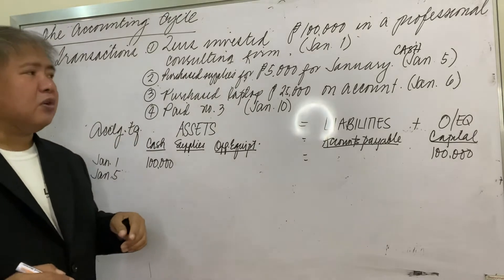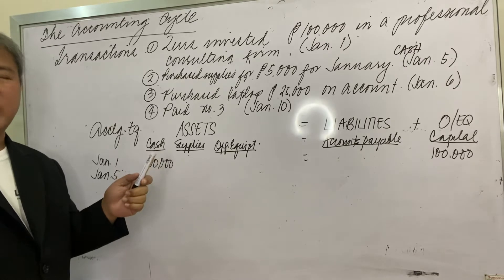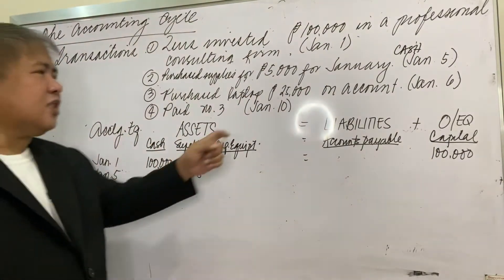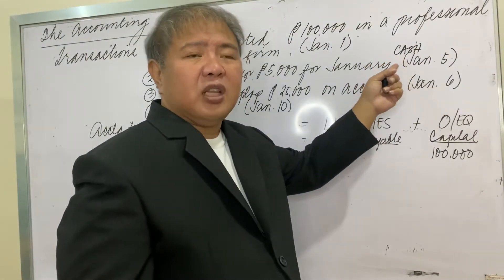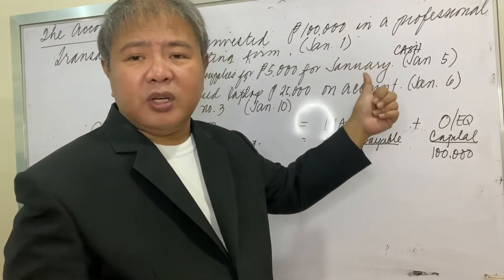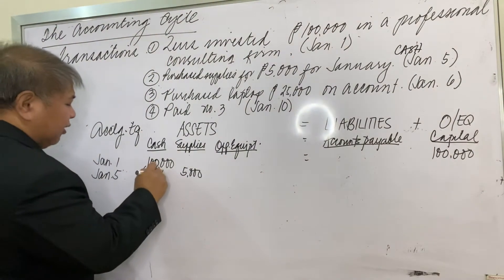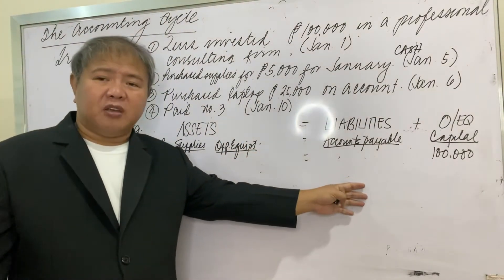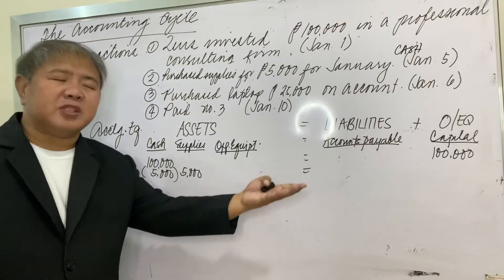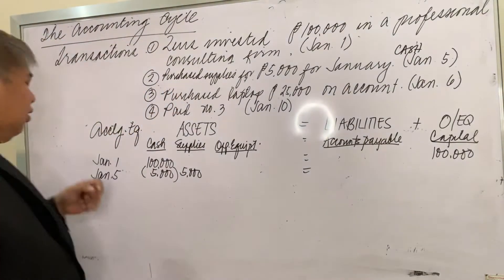On January 5, Zeus purchased supplies for 5,000 pesos in cash. Assets increased — specifically supplies increased by 5,000 pesos. Since the proprietor paid cash immediately, cash decreased by 5,000 pesos. On the other side of the equation there is no effect. The asset side nets to zero, so assets still equal liabilities plus equity.